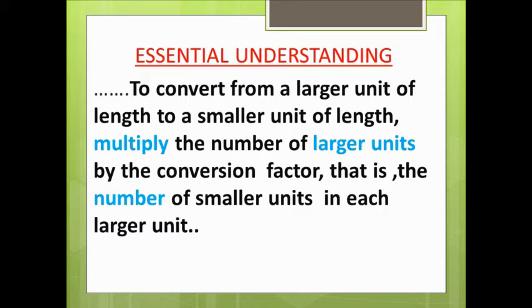multiply the number of larger units by the conversion factor — that is, the number of smaller units in each larger unit. This is the essential understanding for converting metric units of capacity and mass.